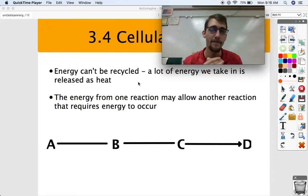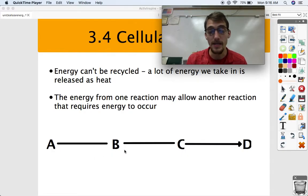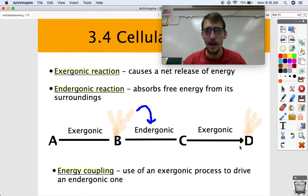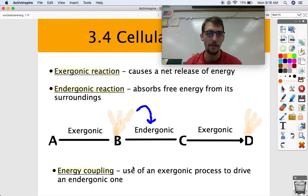So the point is here, we're trying to be efficient with our energy. The energy from one reaction may allow another reaction that requires energy to occur. So here we have a very simplistic metabolic pathway. A is converted to B, B is converted to C, and C is converted to D. So this is our initial reactant, this is our final product here. And how do living things tend to conserve energy in this way, or how do they use energy more efficiently? Well, it's called energy coupling, the use of an exergonic process to drive an endergonic one.